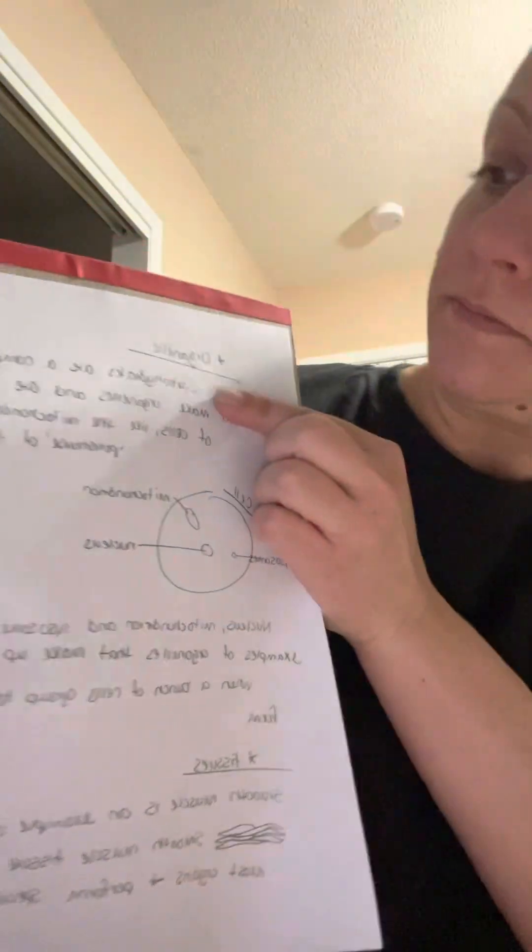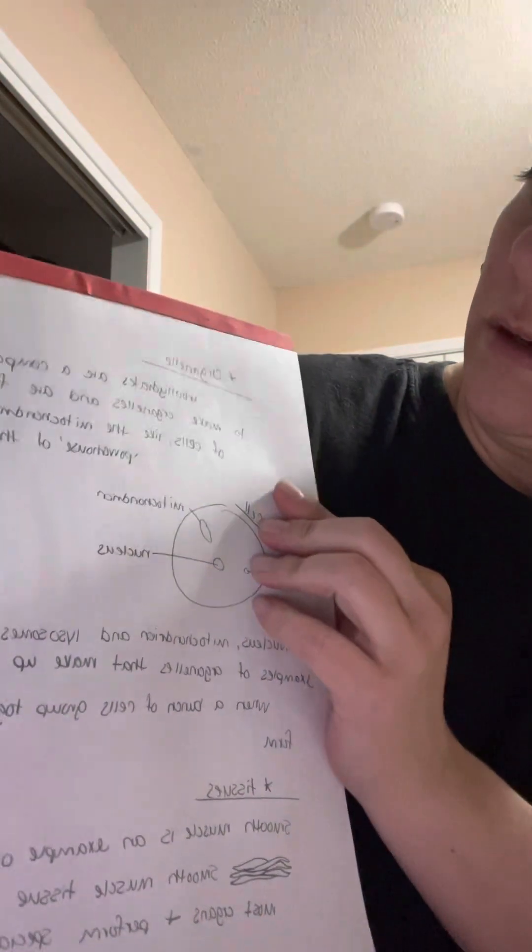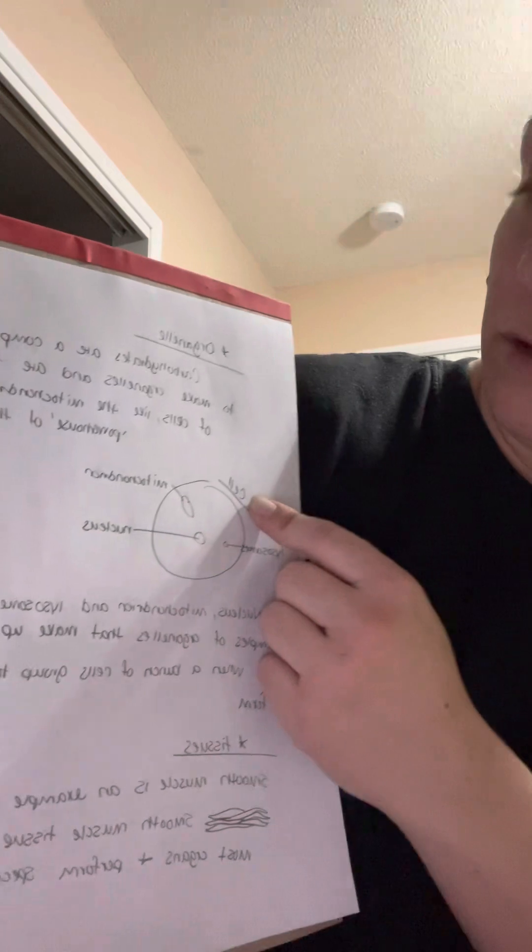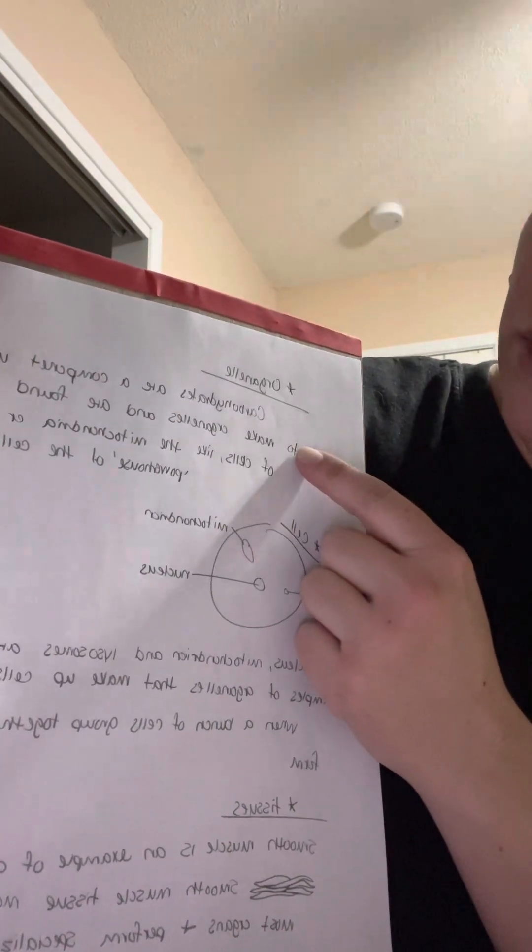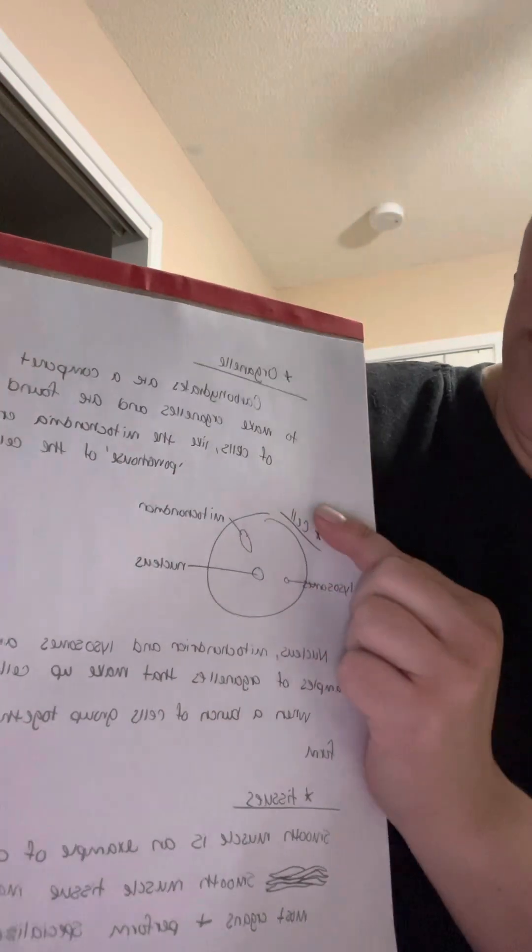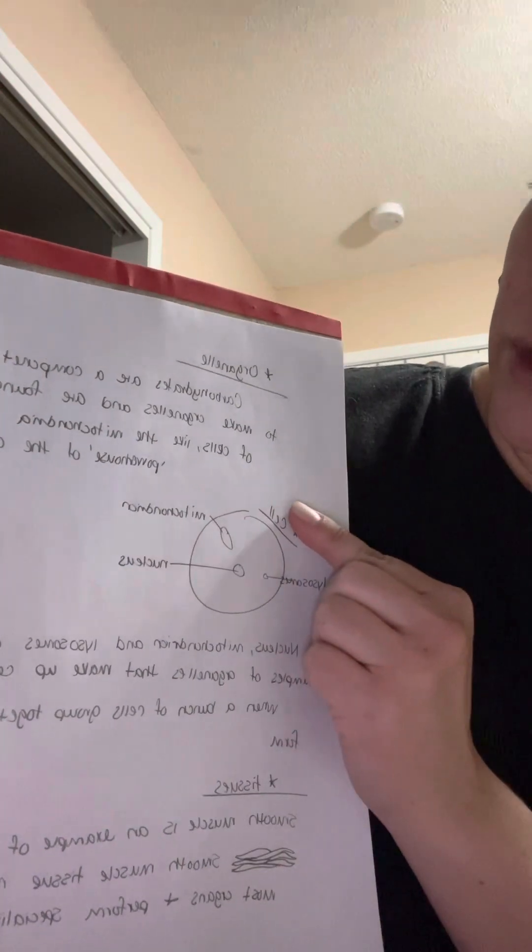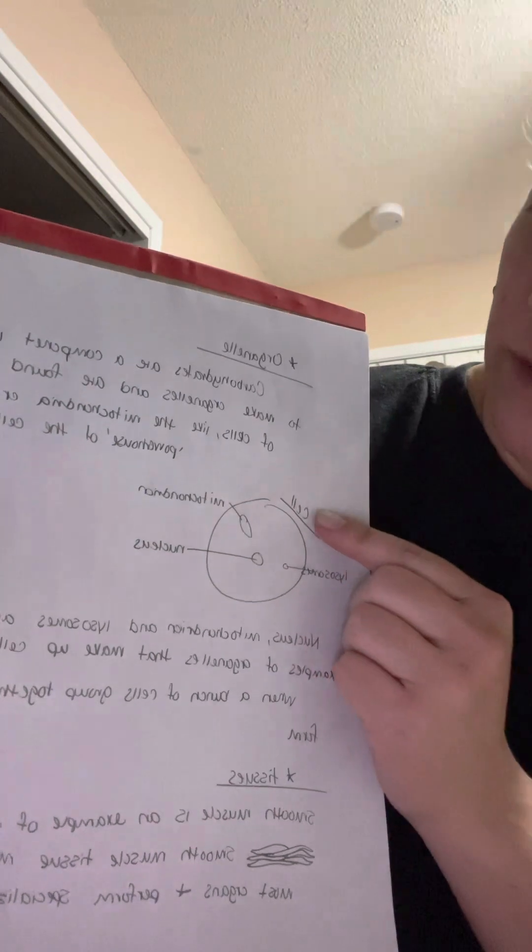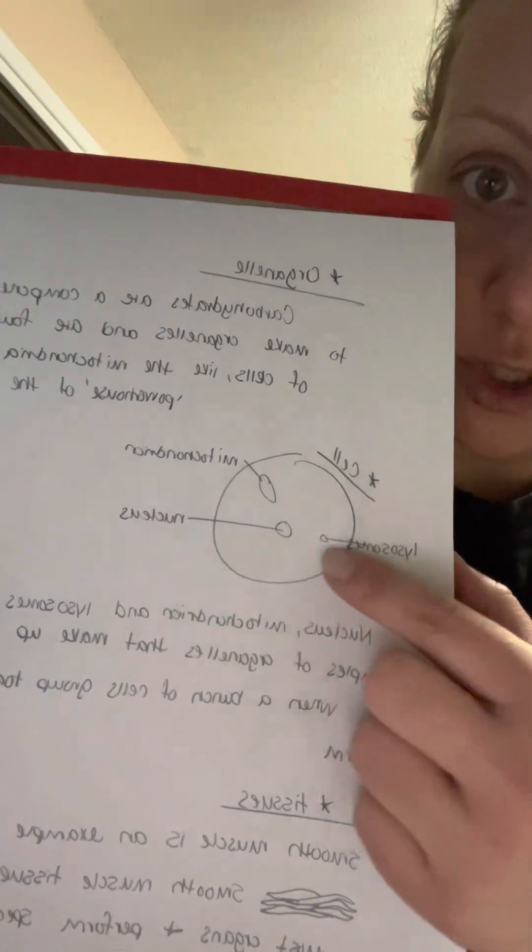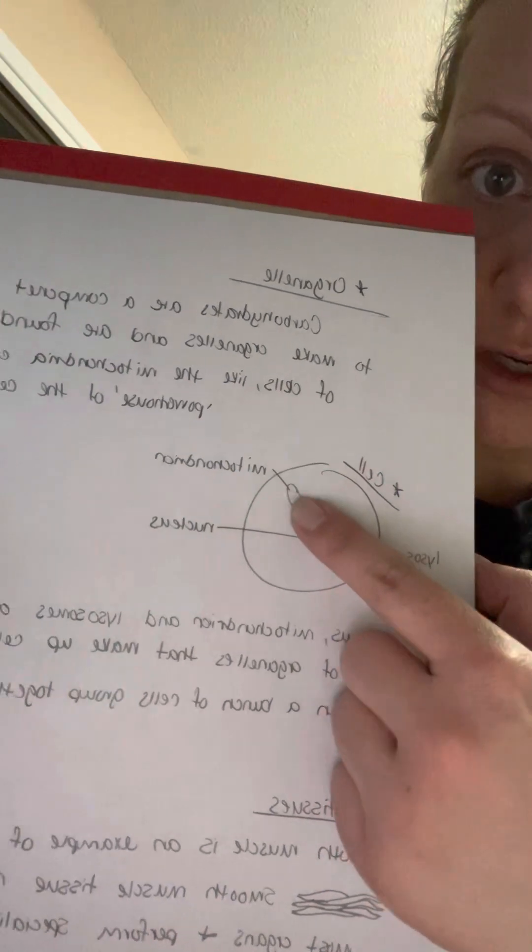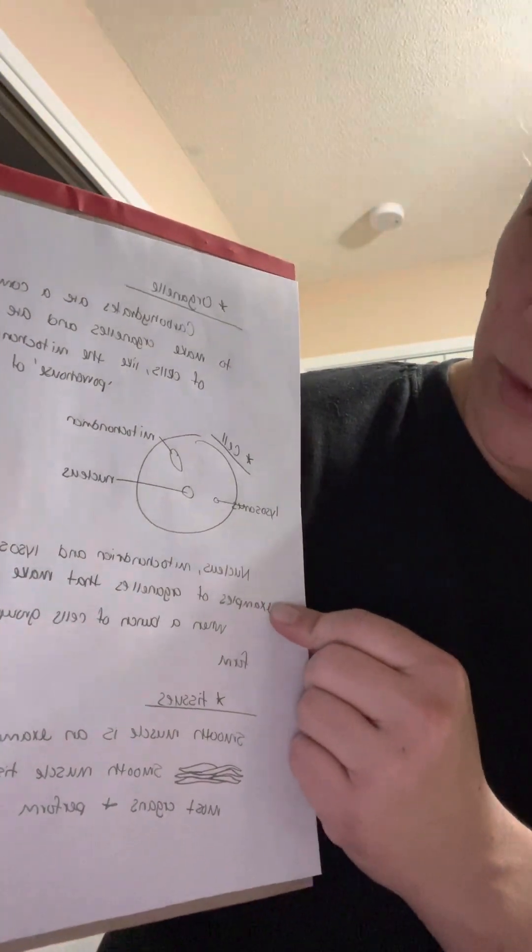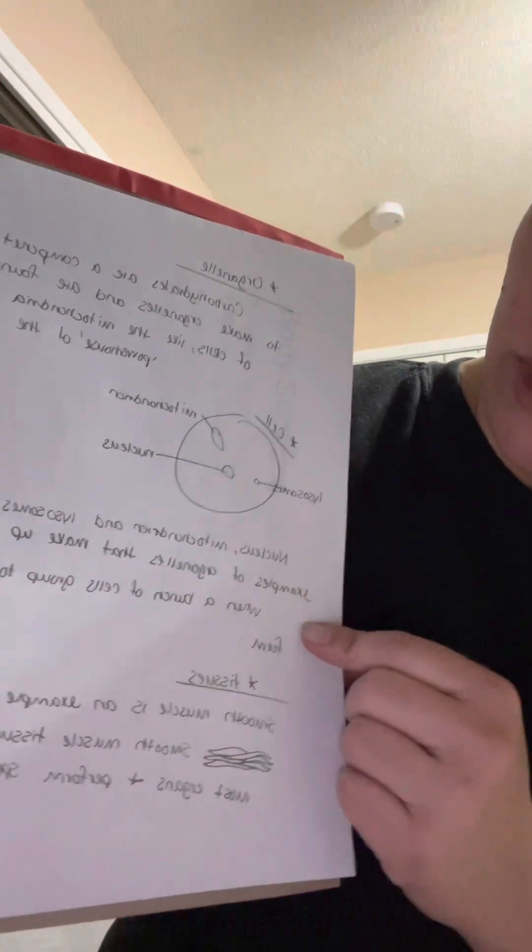Carbohydrates are a component used to make up organelles and are found inside of the nucleus, like the mitochondrion or the powerhouse of the cell. Here we have a cell with lysosomes and nucleus and mitochondrion, and those are all examples of organelles that make up cells.